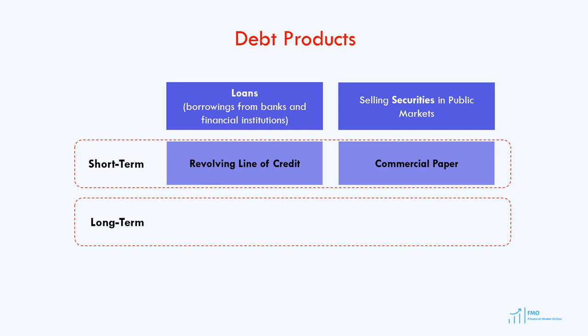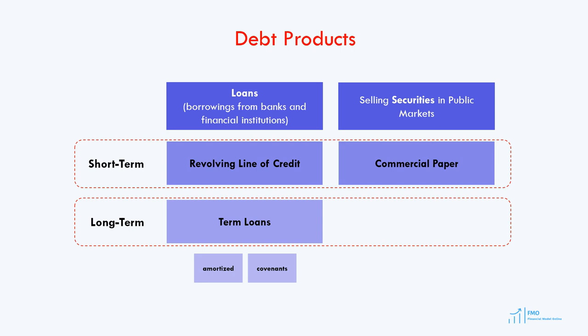Long-term debt is usually called a term loan, and term loans are provided by banks. Term loans are amortized, meaning that the loan's principal is repaid according to a fixed-principle repayment schedule. Term loans also include restrictive covenants — conditions that banks impose on the borrower, and breaching those conditions will result in the borrower's default. For example, if the company decides to sell some of its assets, it may have to ask the lenders for permission. Or if the company wants to raise another loan from a bank, it has to go to the original lenders for permission. In other words, covenants restrict the flexibility of the borrower when it comes to the company's management and operations.